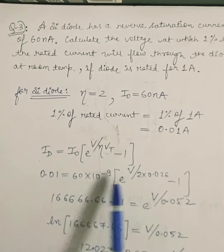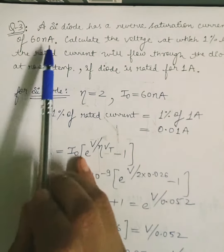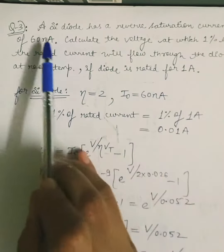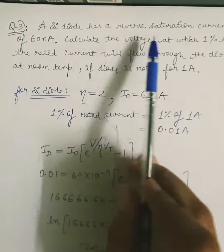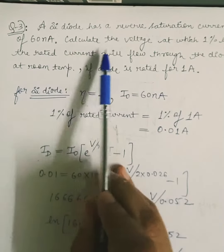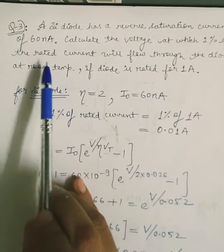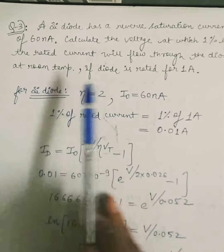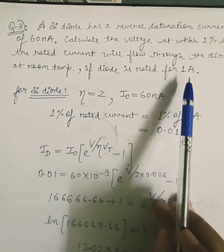This is also known as Shockley equation and we will solve a numerical on this. In this numerical we are given a silicon diode has a reverse saturation current of 60 nanoampere and we have to calculate the voltage at which 1% of rated current will flow through the diode at room temperature if diode is rated for 1 ampere.